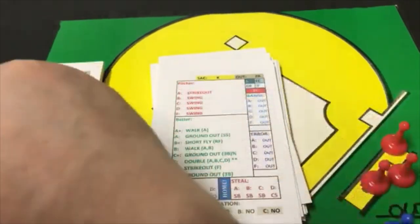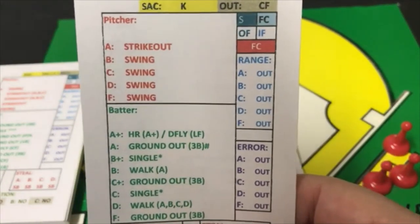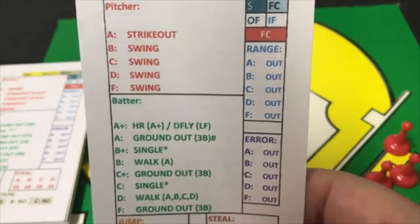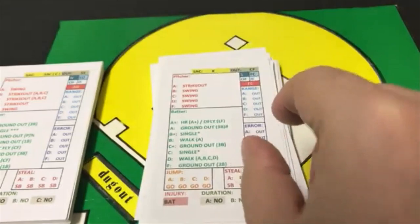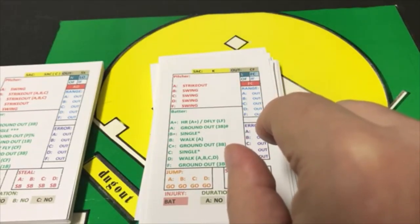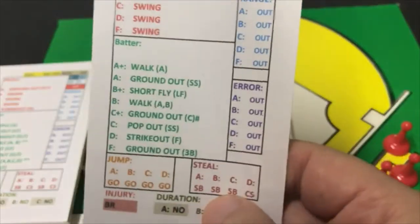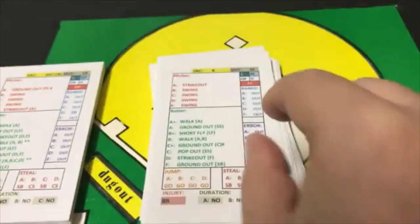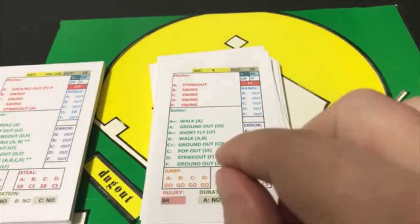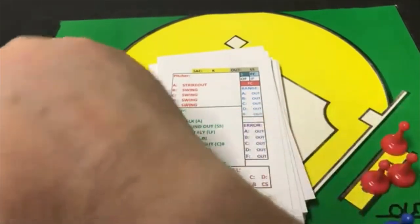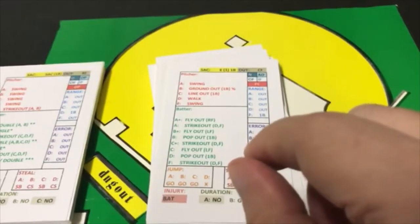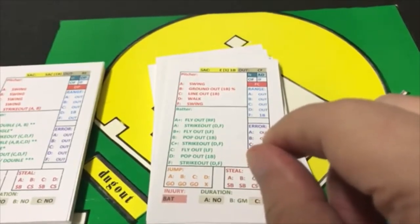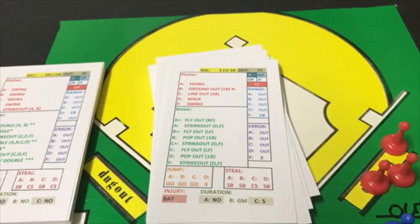Eddie Collins — an A batter — C pitcher gets a swing. A batter gets a ground out to third base with a range check. Third baseman's range is A, so we look at range A: that's an out — five to three. Chick Gandel against a C pitcher gets a line out to first base. No runs for the White Sox in a 1-1 game.